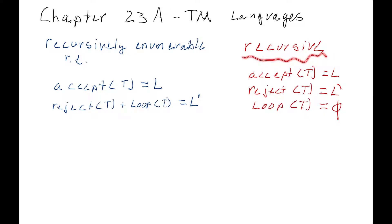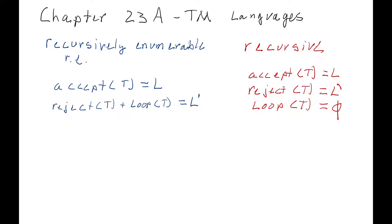With recursive languages, it has to crash on all the words that are not in the language. It cannot loop forever — it will never ever loop forever. This is a little bit nicer to work with. When we put a word on the tape and say go, we know that the Turing machine will eventually either halt accepting the word or crash rejecting the word. We know that it will never get into an infinite loop.